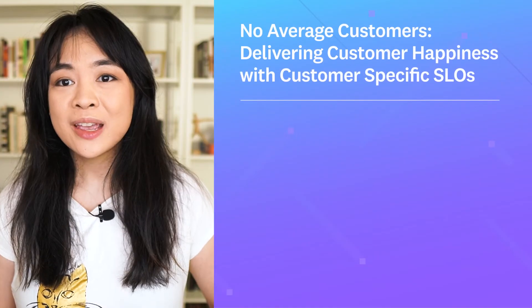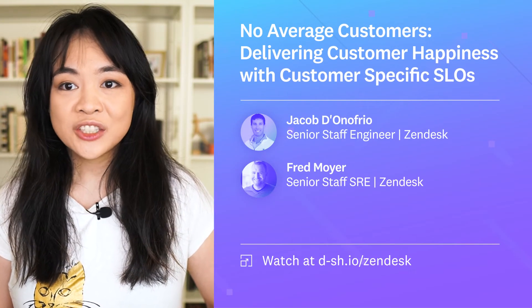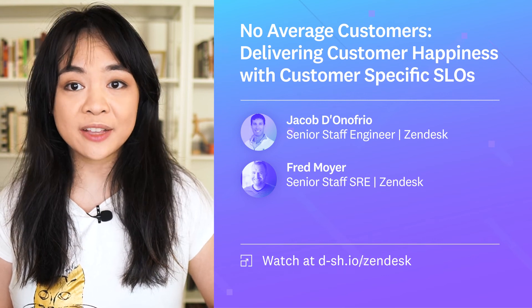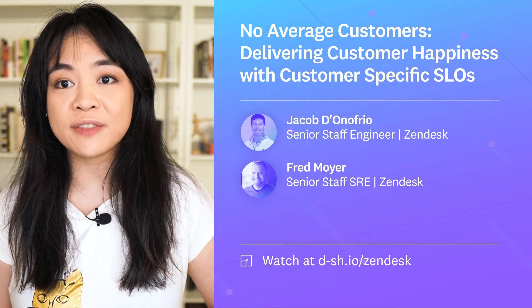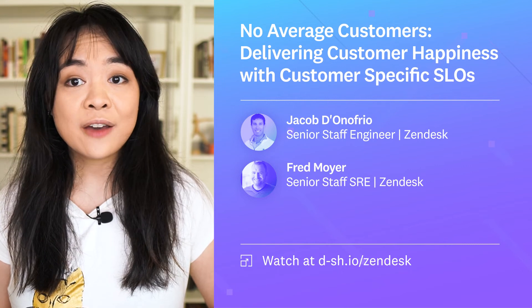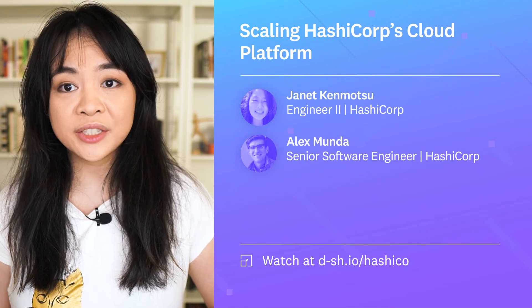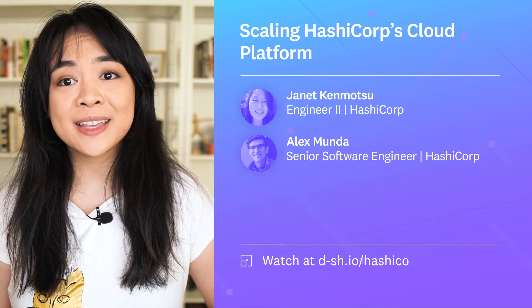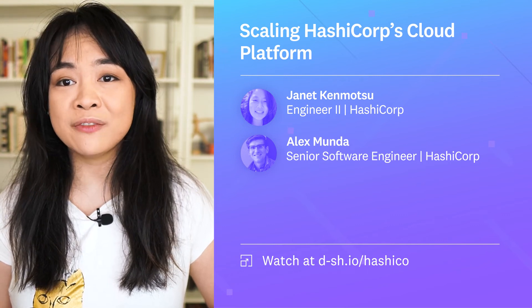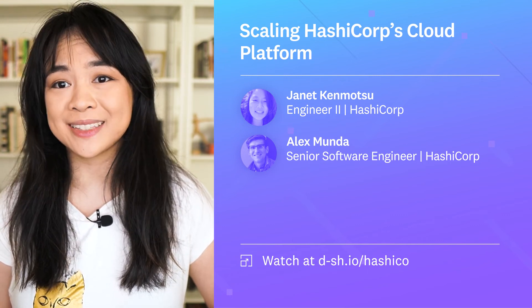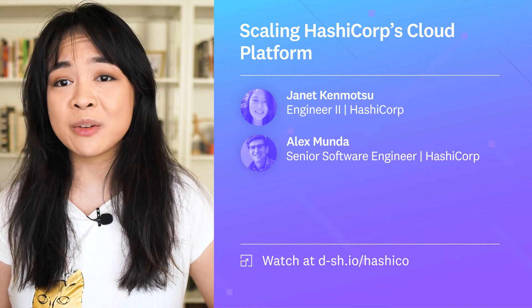Hello, I'm Cecilia, and I'm on the community team here at Datadog. Last month at Dash, we had the opportunity to hear talks from the Datadog community. Jacob D'Onofrio and Fred Moyer from Zendesk shared how they used customer-specific SLOs to create a more realistic picture of their customers' experience, specifically adopting a methodology of measuring request performance using latency bands. Janet Kenmotsu and Alex Munda from HashiCorp gave an overview of how they scaled HashiCorp Cloud Platform's concurrent data plane infrastructure provisioning by 300%, and how they used Datadog to discover bottlenecks along the way.